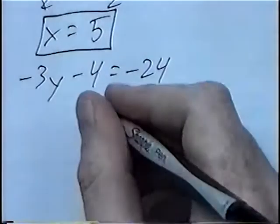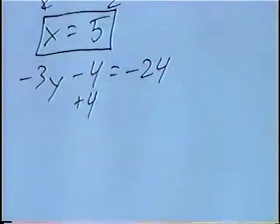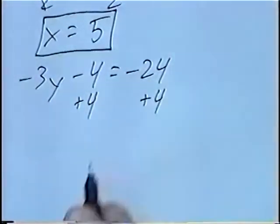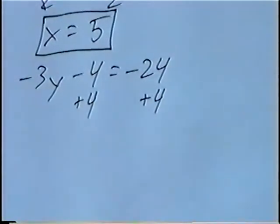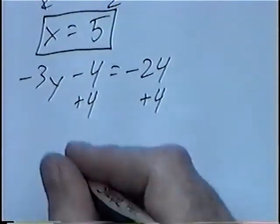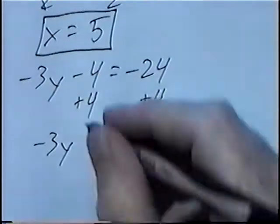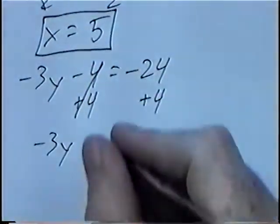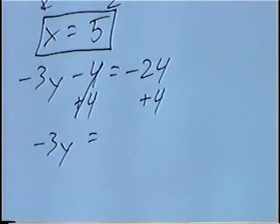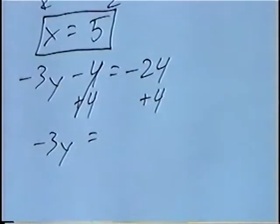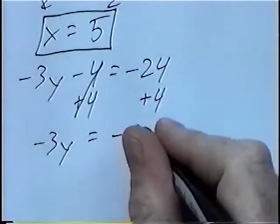Minus 4, the opposite of minus 4, would be plus 4. And again, we'll put plus 4 on both sides of the equation. Negative 3y would stay the same. Minus 4 and plus 4 would cancel. Equals, negative 24 plus 4 would be negative 20.